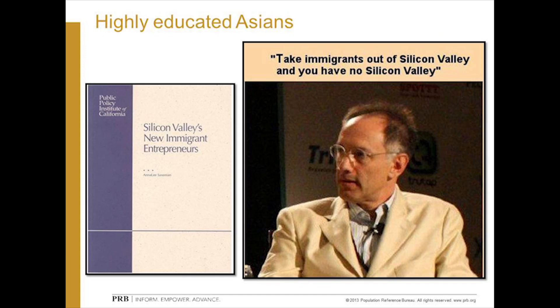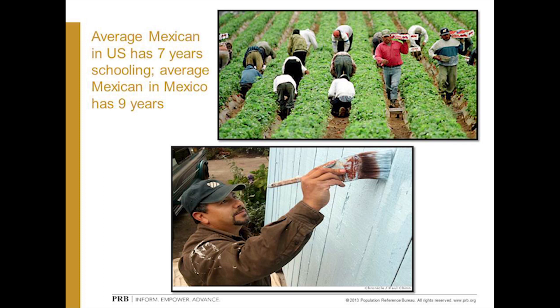The native-born have a diamond shape — a wide bulge in the middle for people who completed secondary school but not college — whereas migrants tend to be either college-educated or not have finished high school. Think of Indian and Chinese foreign-born residents in Silicon Valley versus Mexican-born workers in agriculture and services. The average Mexican-born person in the U.S. actually has less schooling than the average Mexican-born person in Mexico, as those coming tend to come from rural areas where schooling levels are lower.